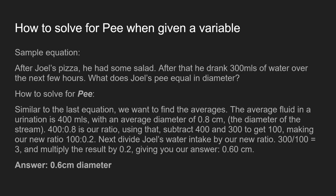After the pizza, he had some salad. After that, he drank 300 milliliters of water. This is where the pee part comes in. It's asking you how much does his pee equal in diameter? You're probably wondering how does pee have a diameter — it's talking about the stream, the solid stream that comes out when you pee. The diameter of that stream is easily calculated.